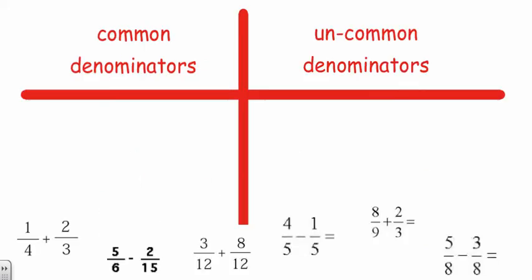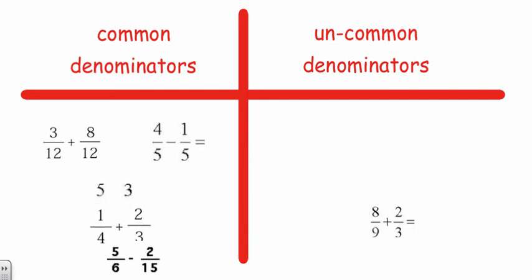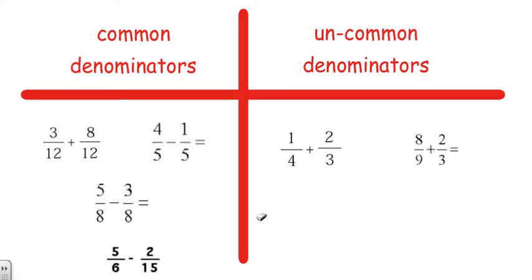Now let's sort these into common and uncommon denominators. Do this quickly in your notebook with me. We've got common denominators - those bottom numbers are the same. So I can see one right now, three-twelfths plus eight-twelfths, denominators are the same. Then I've got another one, four-fifths minus one-fifth, denominators are the same. And there's one more, five-eighths minus three-eighths, denominators are the same. These other fractions, all the denominators are different, so we could not add or subtract them as they are. We would need to find common denominators.